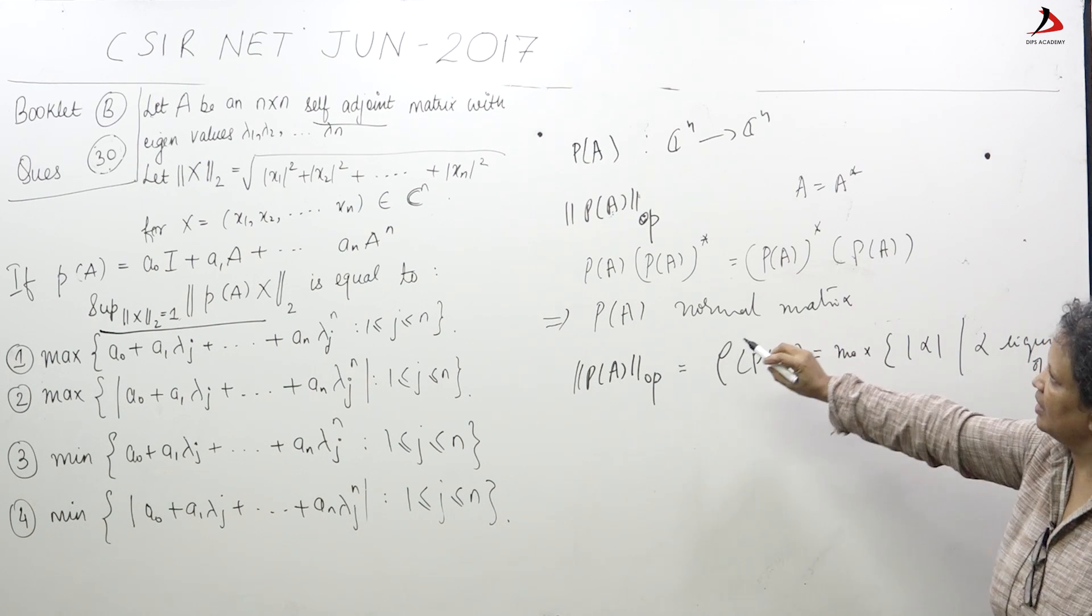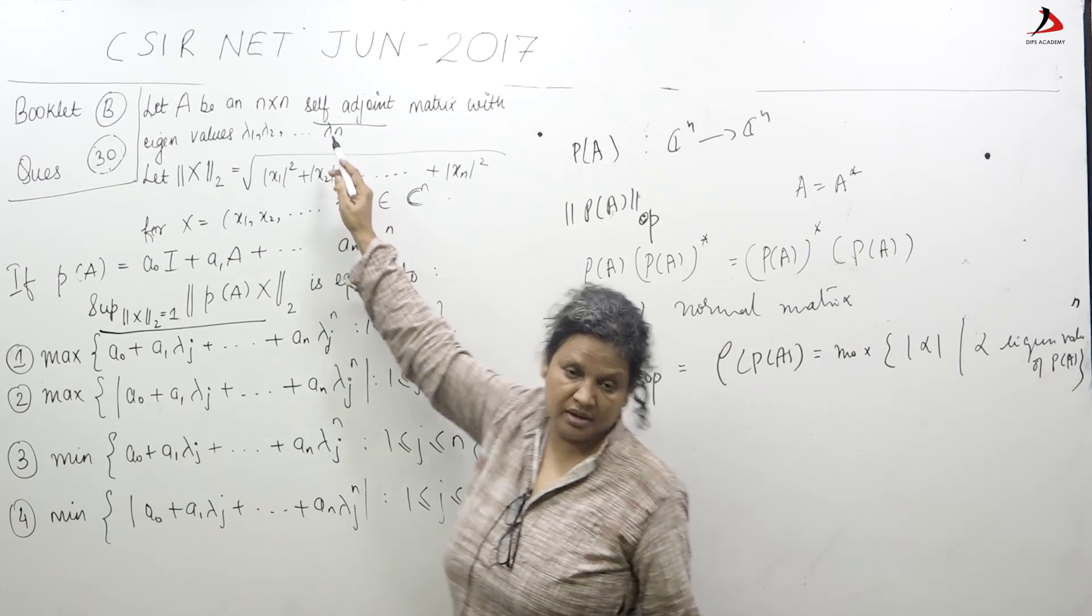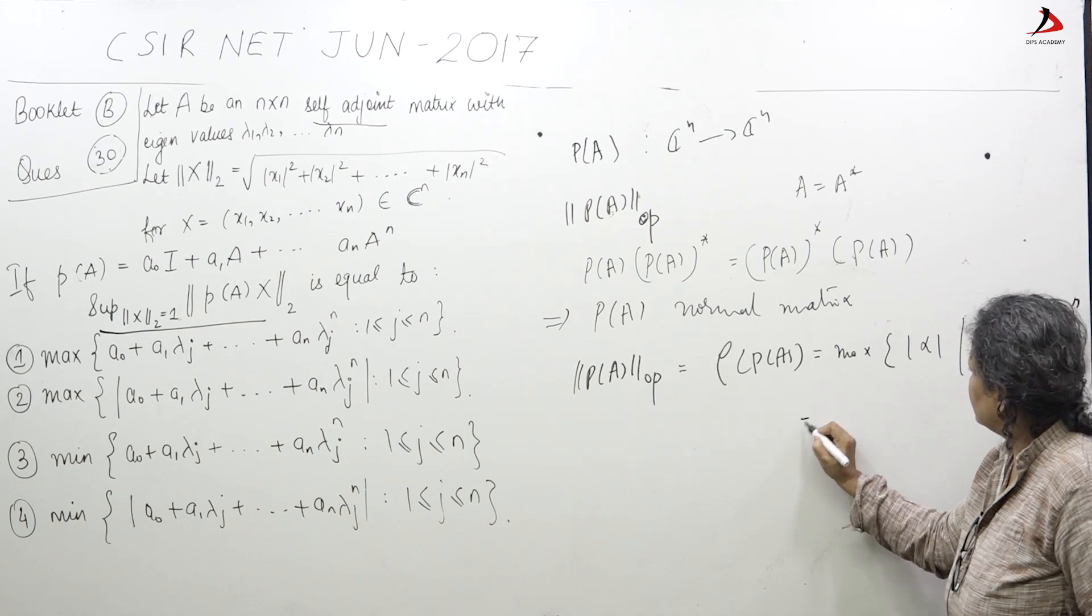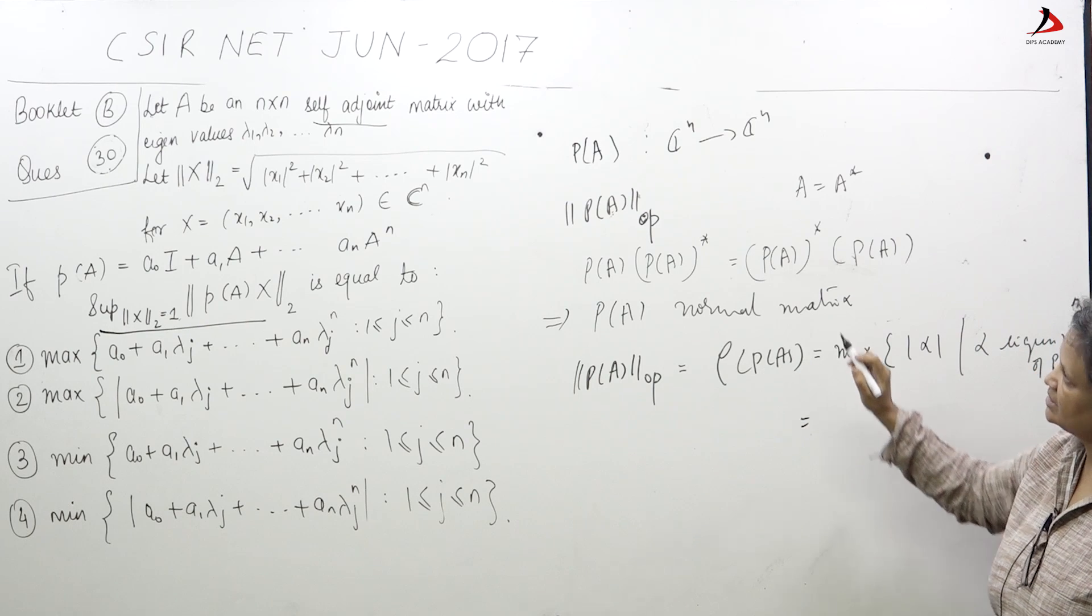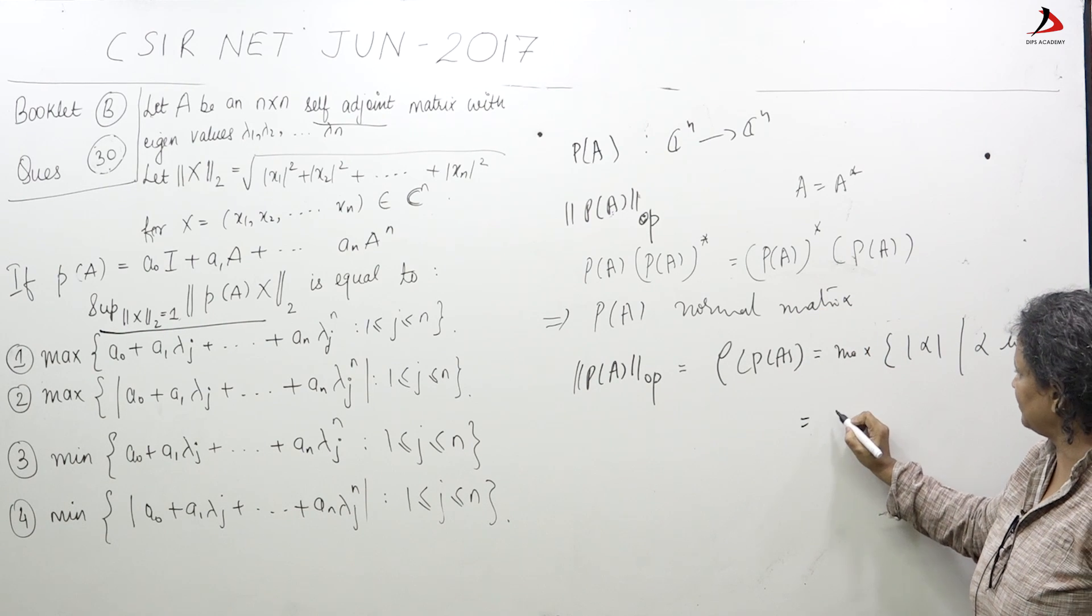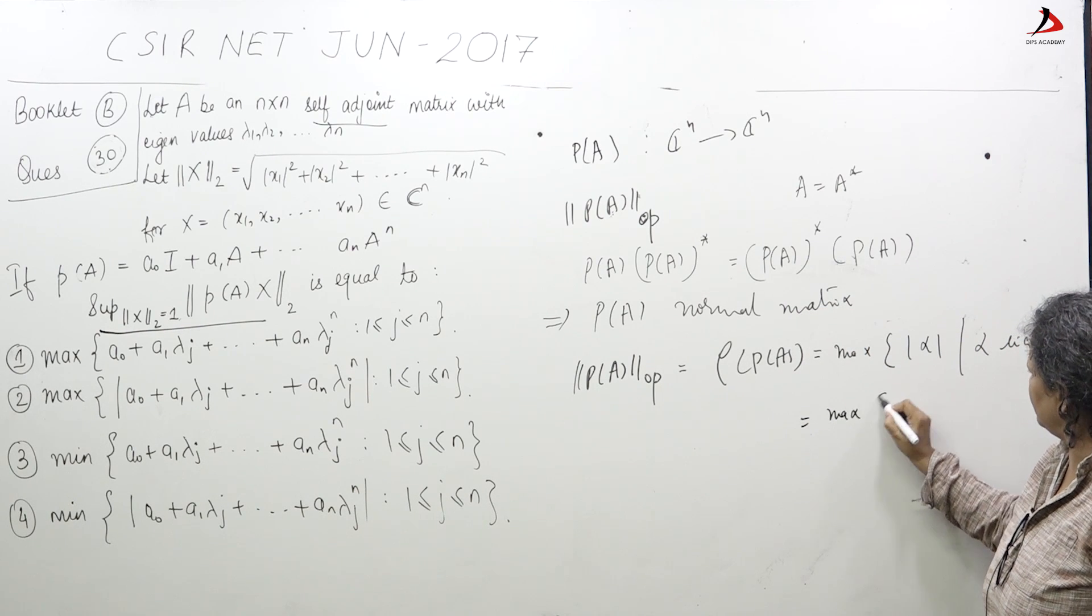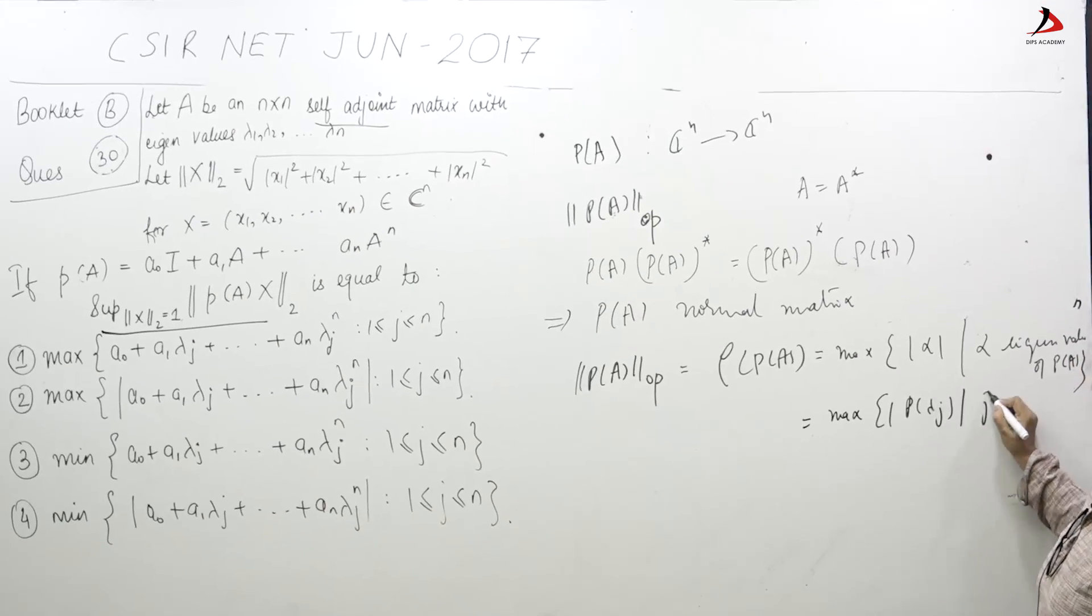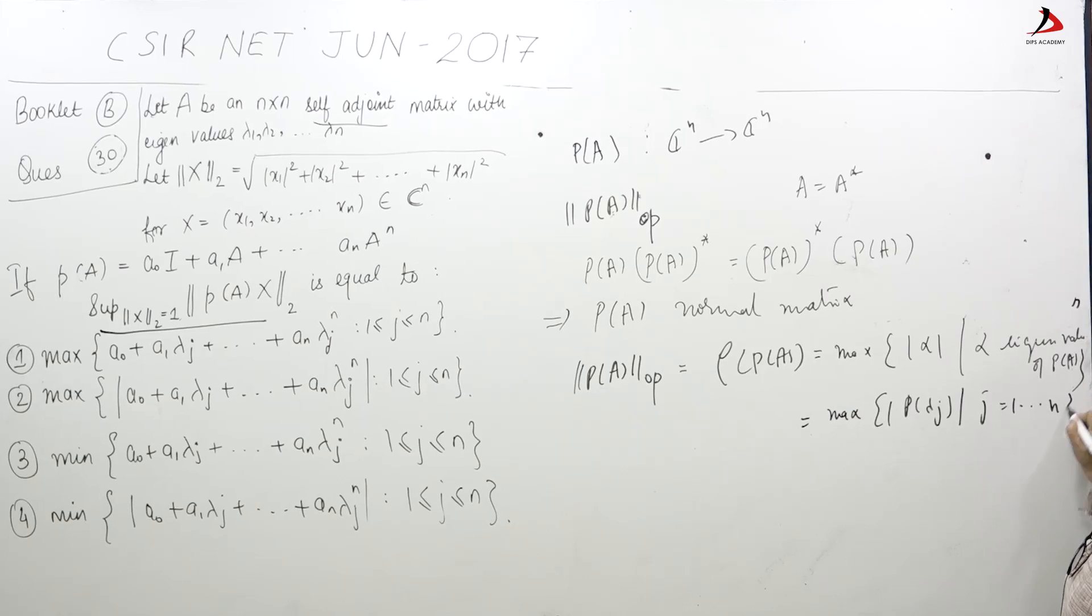Now this is equal to, you know lambda 1 up to lambda n are the eigenvalues of A, so eigenvalues of P of A is P of lambda 1 up to P of lambda n. Maximum of P of lambda j, j is equal to 1 to n.